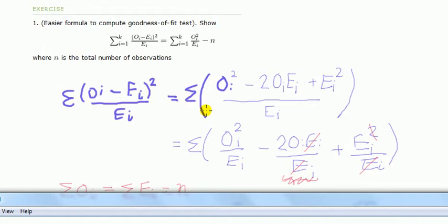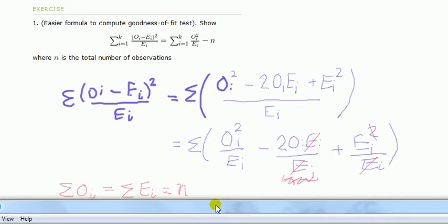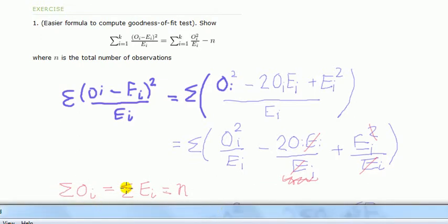Now, we note at this stage that the sum of the observed values across all cells, categories, and the sum of the expected cell counts are the same, which we denote by n. The question says n is the total number of observations. This is always true.